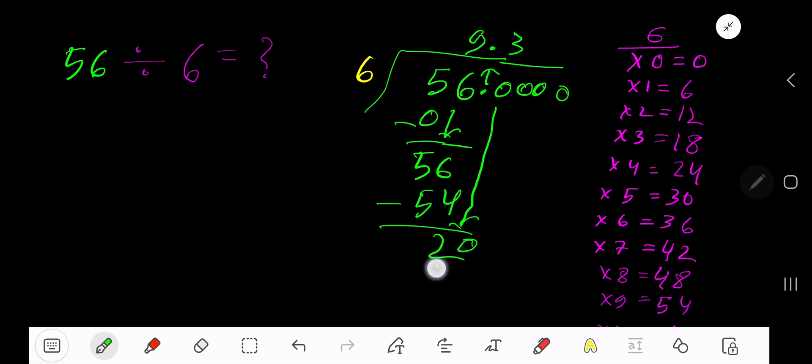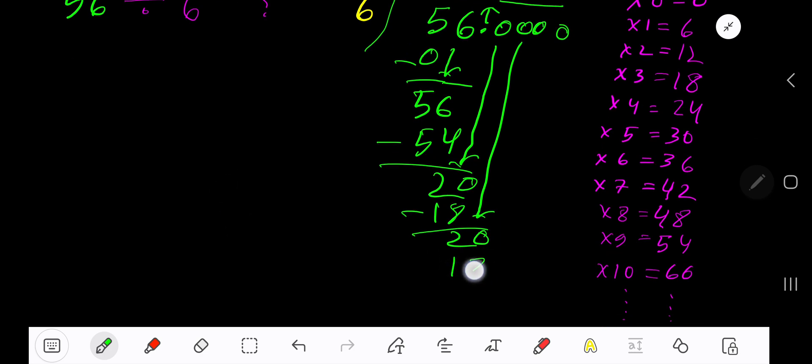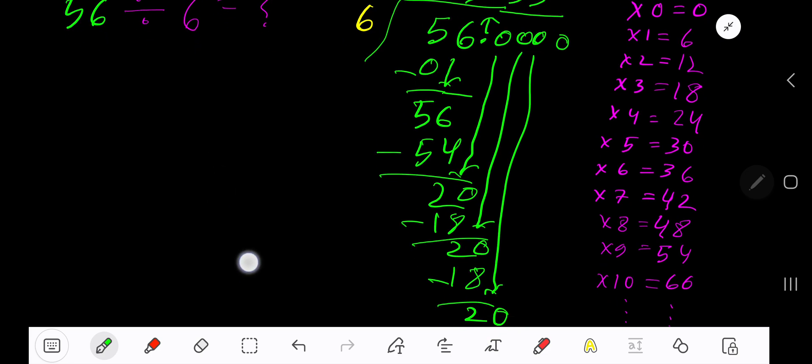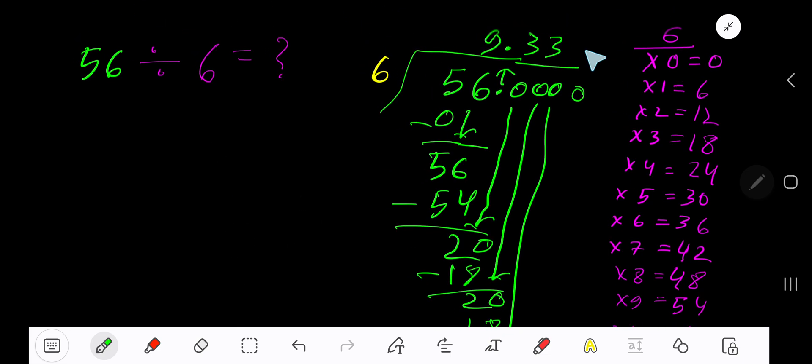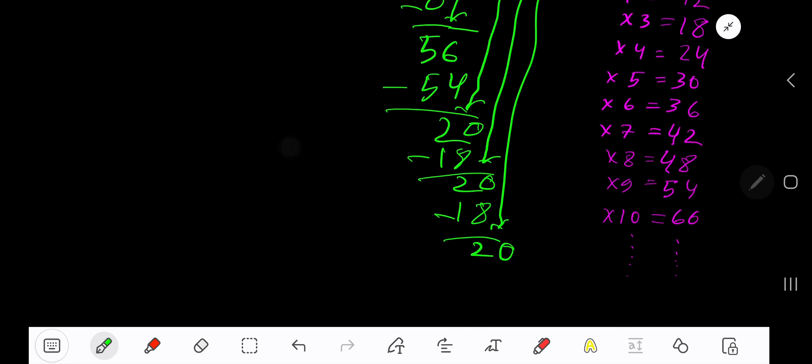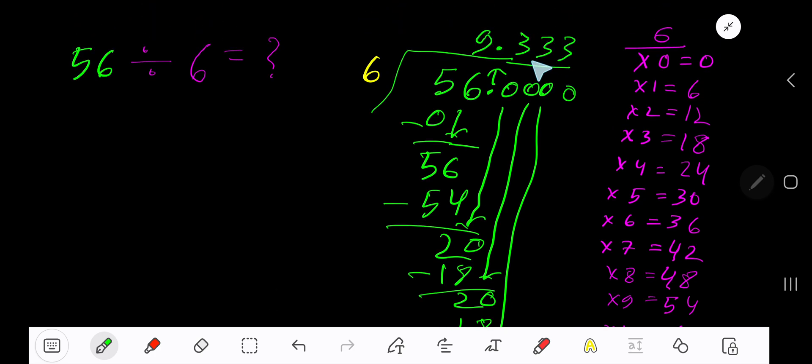So 3 times. 3 times 6 is 18. Subtract to get 2. Bring down another 0. 6 goes into this 20 how many times? Again 3 times. 3 times 6 is 18. Subtract to get 2. You can bring down more zeros, but since we have gotten 3 places after the decimal...